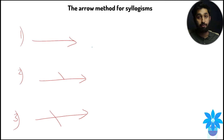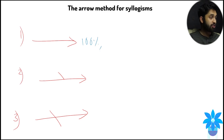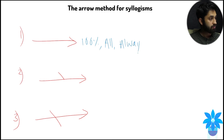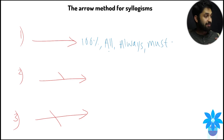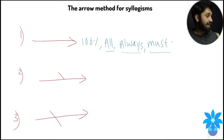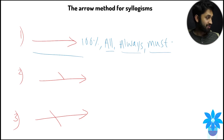This first arrow represents 100%. The keywords we associate with this arrow are: all, always, must — keywords that represent 100%. So every time you see all, or always, or must, or any other keywords similar to these, you want to draw this arrow. Don't worry, it will make a lot more sense further on.